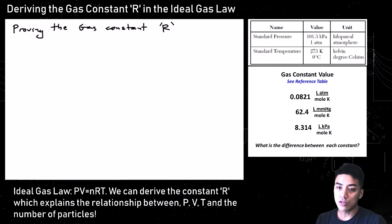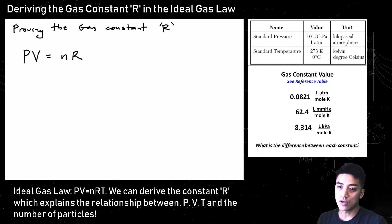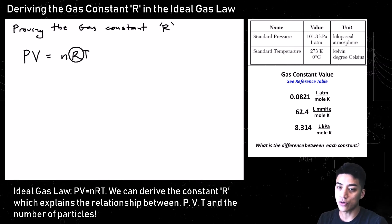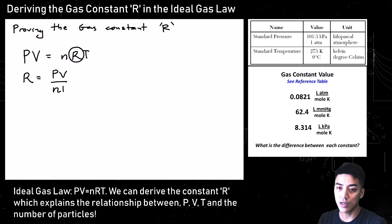Understanding Avogadro's principle leads perfectly into the ideal gas law. The ideal gas law is PV equals nRT. There is a gas constant, R, that unifies the relationship between pressure, volume, n (the number of particles), and temperature. We're going to go ahead and prove what R is. When you isolate R algebraically, you get PV over nT.